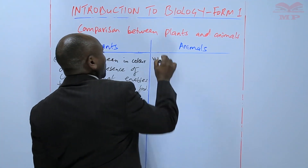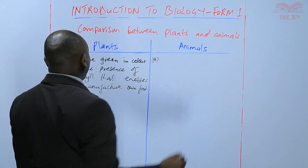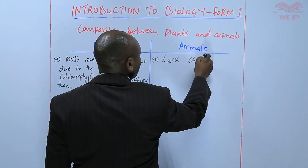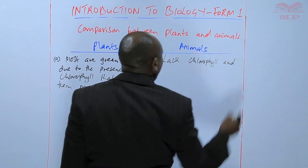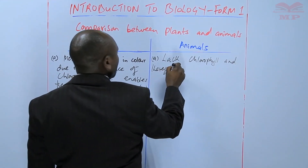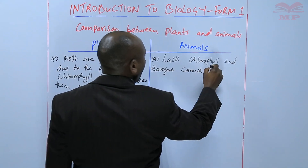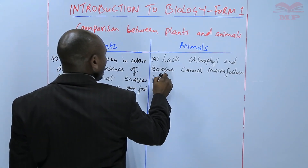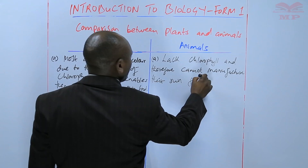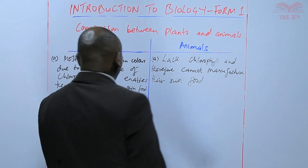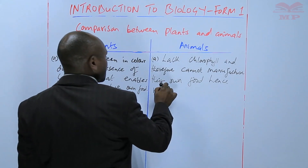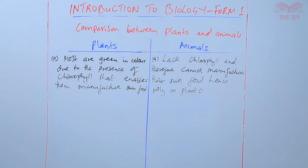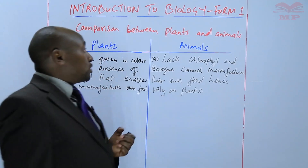On the other hand, when doing a comparison we should compare point by point — animals lack chlorophyll, and therefore cannot manufacture their own food. Hence, they rely on plants for food. So that is one fundamental difference between plants and animals.